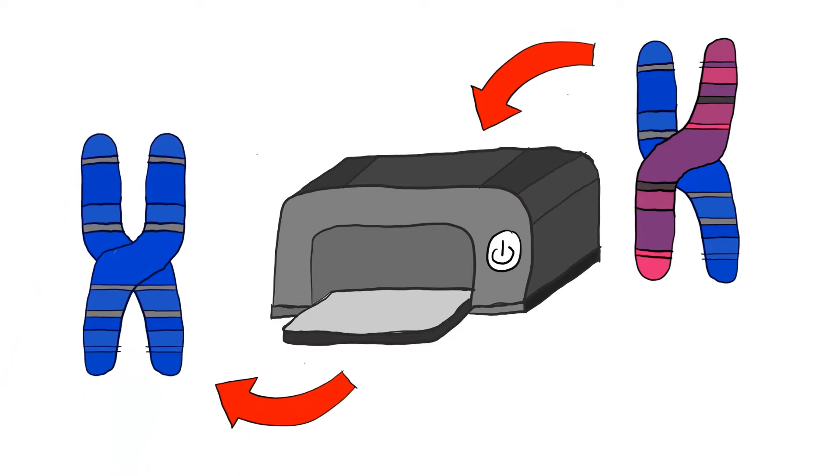To show you what I mean, have a look at what I'm printing. Before I print my chromosomes, you can see one has my dad's imprint, and the other has my mum's imprint. But when I print them,